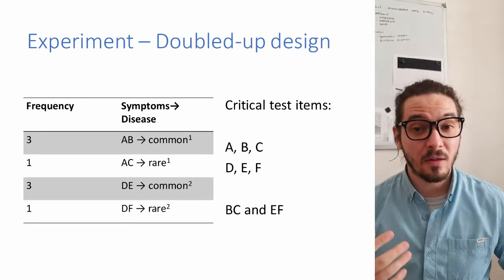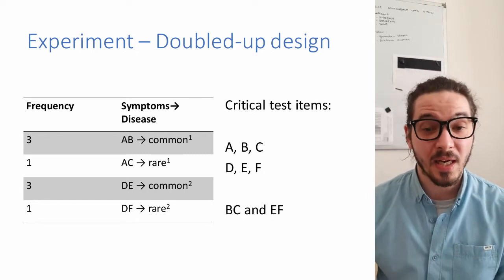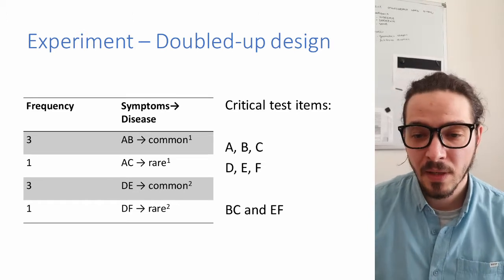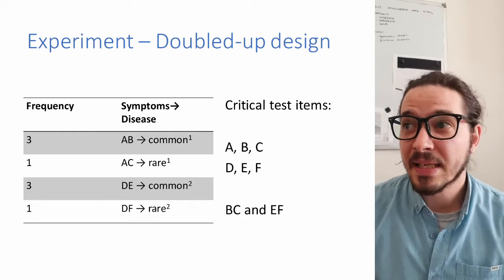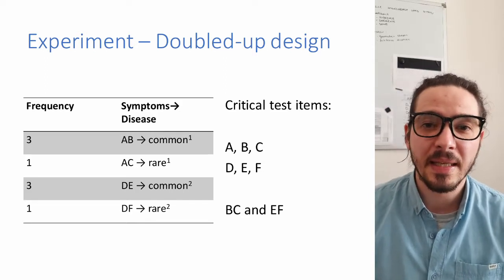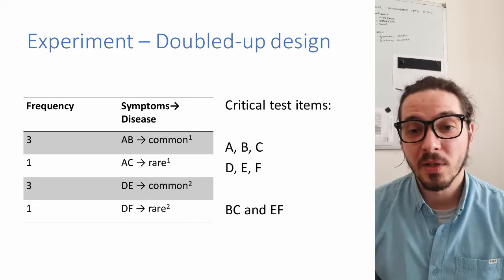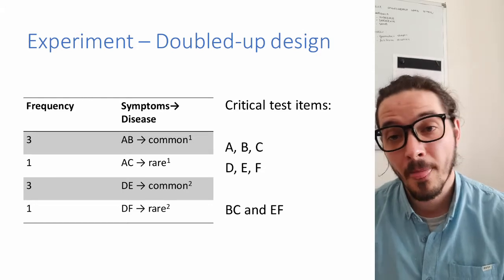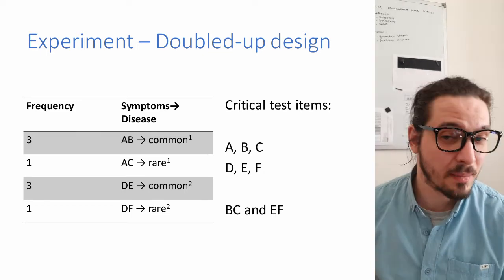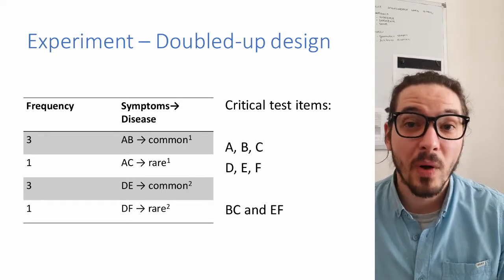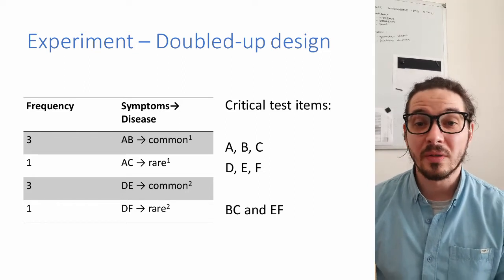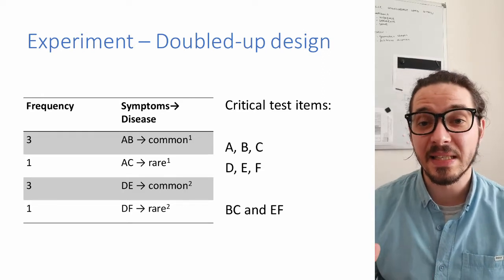Here is a more technical description of what participants encountered. In the left table, there are two sets of symptoms and diseases: A-B with common one and A-C with rare one, and a second set D-E with common two and D-F with rare two. On the right side, you see the critical test items. We were mainly interested in individual symptoms A, B, C and D, E, F, and also the ambiguous combination of conflicting unique symptoms B-C and E-F.